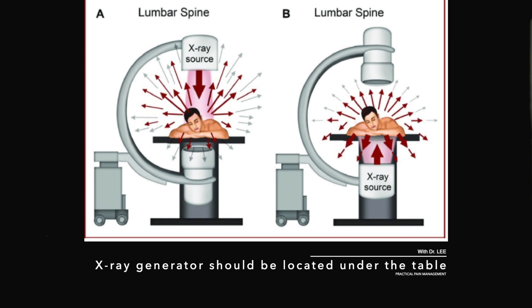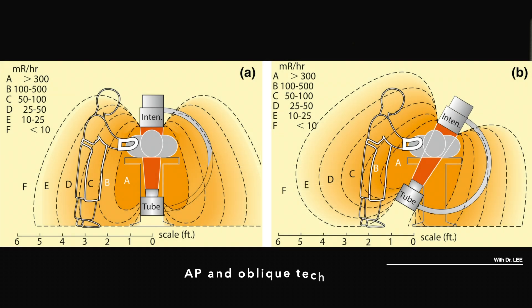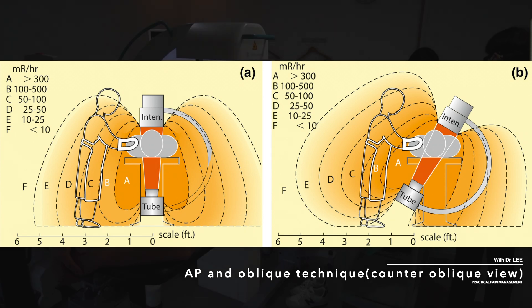First, to reduce radiation hazard to the operator, the X-ray generator should be at the bottom, under the table, not above the table. If the X-ray generator is located above the patient, scattered radiation intensifies to the operator. To reduce radiation hazard to the patient and operator, I try not to use lateral X-ray beam projection. I prefer to use AP and oblique technique. Sometimes I like to watch the object on counter-oblique view.